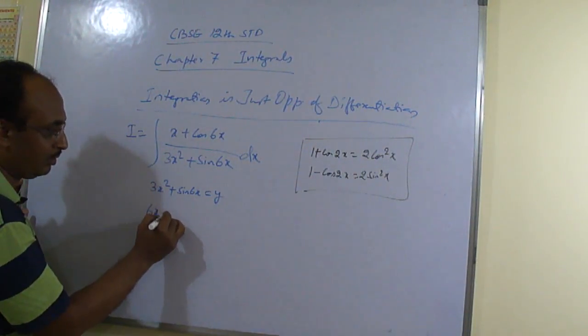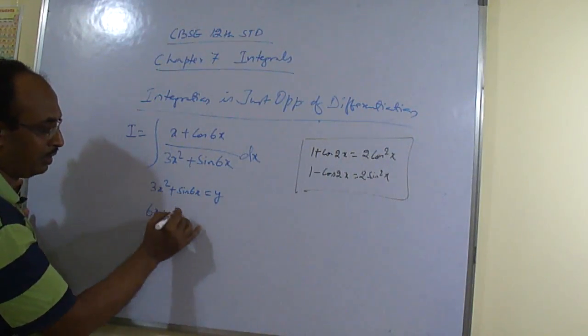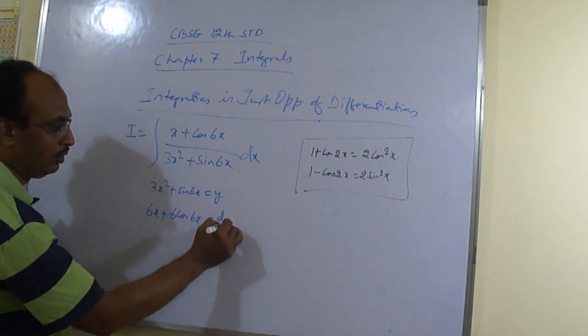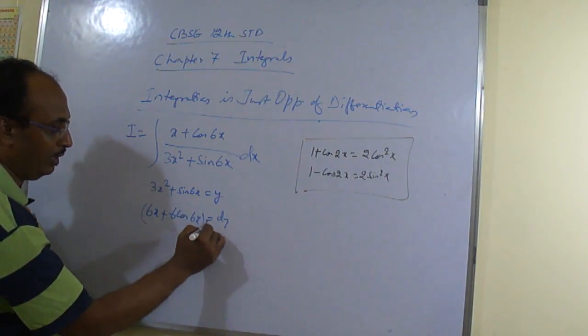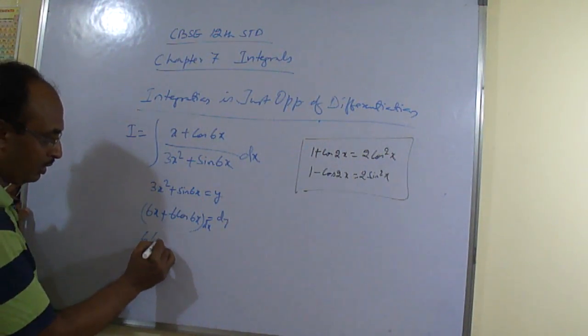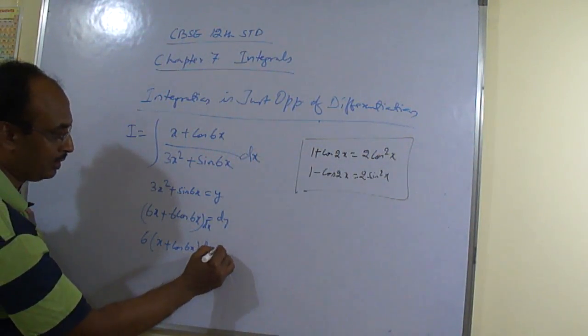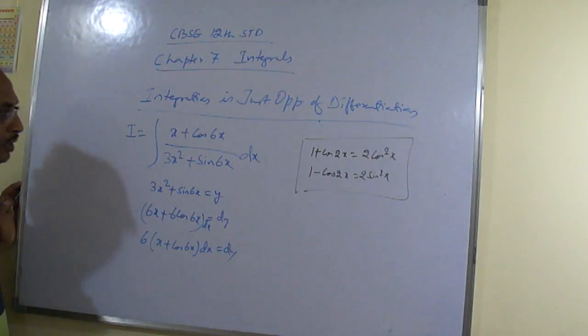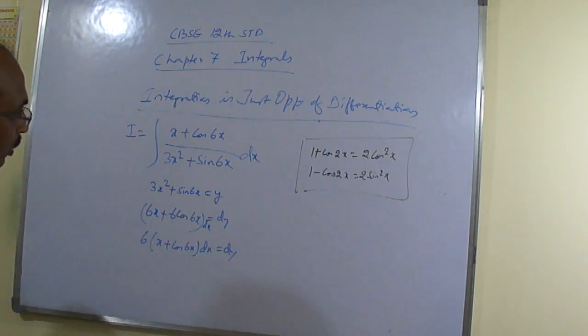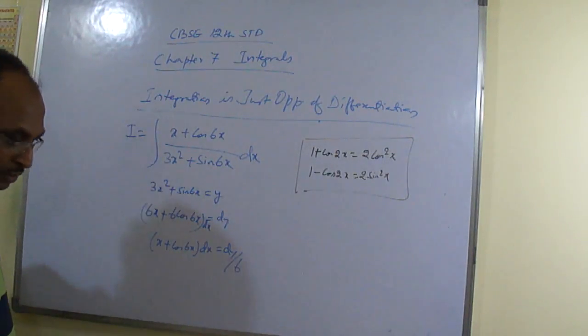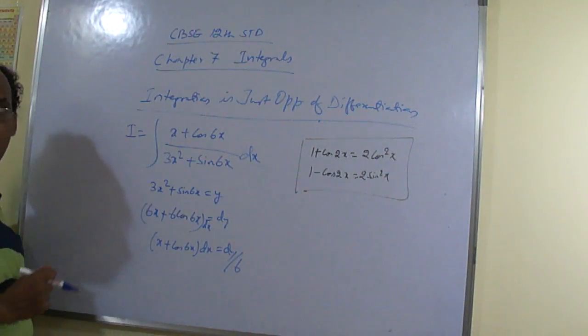3x square plus sin 6x is equal to y. But first we need to find out. And then we have to see that in any way whether numerator part is coming in your denominator differentiation. So, what? Like 6x plus 6 cos 6x is equal to dy. Here, dx. Then 6x plus cos 6x dx is equal to dy. Correct or not? So, what you can write here, this one by 6. Yes or no? So, the same thing is there in numerator.